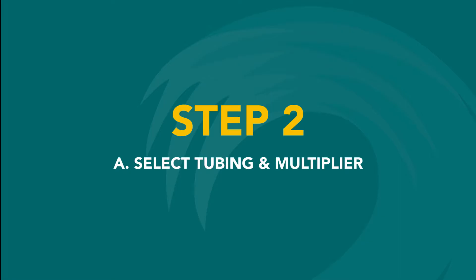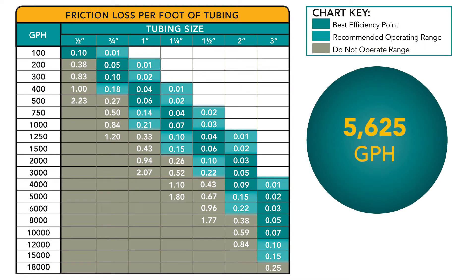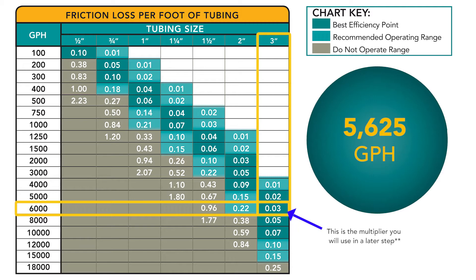There are a few things we'll need to accomplish in this next step. First, we'll find the ideal tubing size for this flow, and a multiplier that will tell us the friction head. If you already have plumbing in place, the chart will give you the multiplier for the friction in your existing system. We'll round up our flow of 5,625 to 6,000 gallons per hour, and on the friction per foot of tubing chart, run our finger to the dark blue cell indicating the best plumbing size to reduce friction. In this case, it's 3-inch tubing, with a multiplier of 0.03.